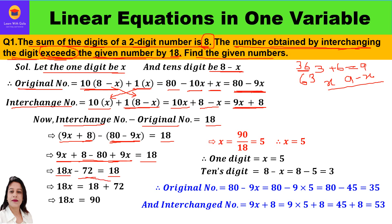Taking minus 72 to the other side, it becomes plus 72. So 18x equals 18 plus 72, which equals 90. Therefore x equals 90 divided by 18, which equals 5. The ones digit is x, which is 5, and the tens digit is 8 minus x, that is 8 minus 5, which equals 3.